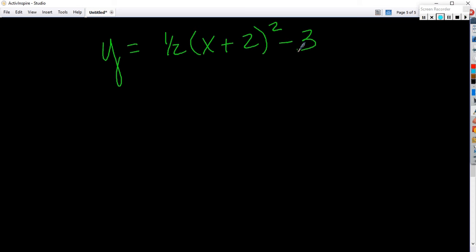Ready? Vertex form, do you recognize it? Sure you do. It's up. Skinny or wide? Wide. What is the vertex? Negative two, negative three. It's that easy.